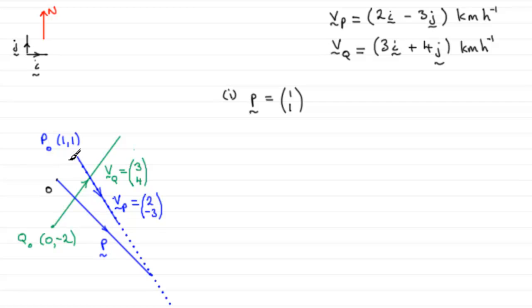And our starting point is going to be the vector 1,1. In other words, i plus j. You can write it as a column vector or you can write it in terms of i and j. I'm sure it doesn't matter. So, we go from the origin then to our starting point and then we follow it with t lots of the velocity vector 2 minus 3.